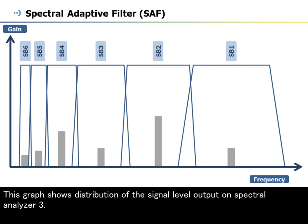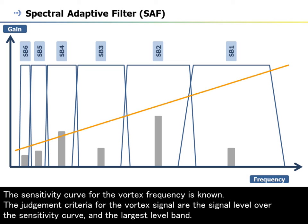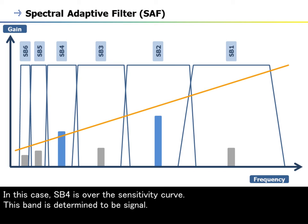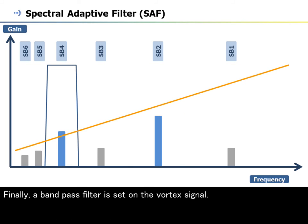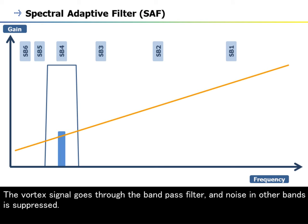This graph shows the distribution of the signal level output on spectral analyzer 3. The sensitivity curve for the vortex frequency is known. The judgment criteria for the vortex signal are the signal level over the sensitivity curve and the largest level band. In this case, Sb4 is over the sensitivity curve — this band is determined to be signal. Sb2 is larger than Sb4, but its signal level is lower than the sensitivity curve, so it is determined to be noise. Finally, a bandpass filter is set on the vortex signal. The vortex signal goes through the bandpass filter, and noise in other bands is suppressed.